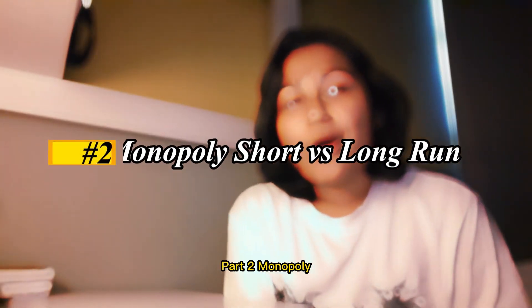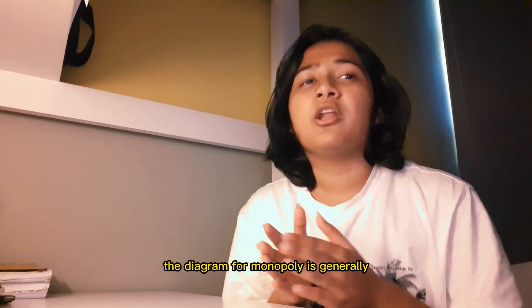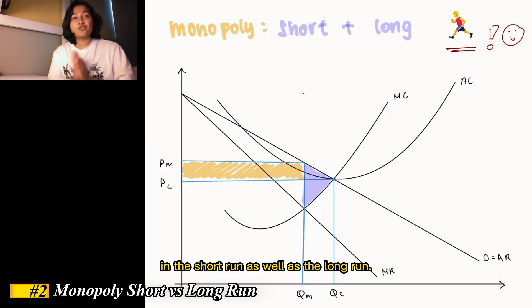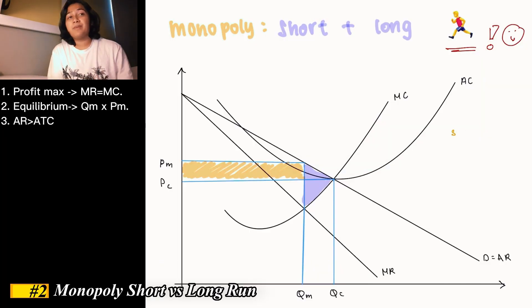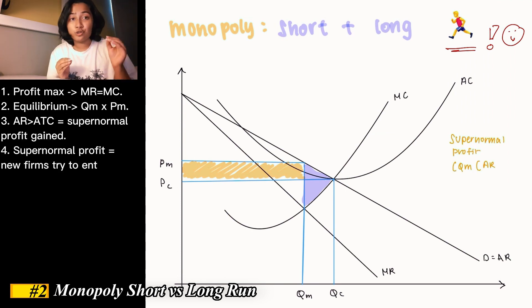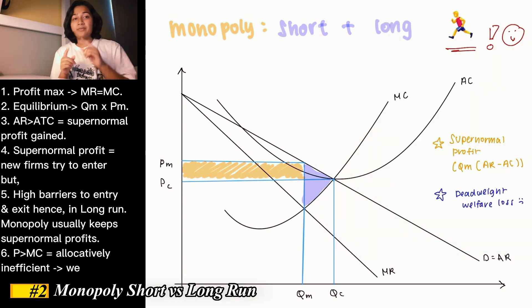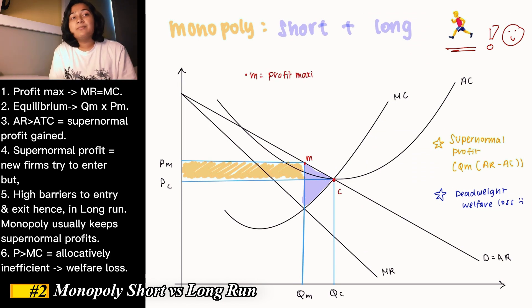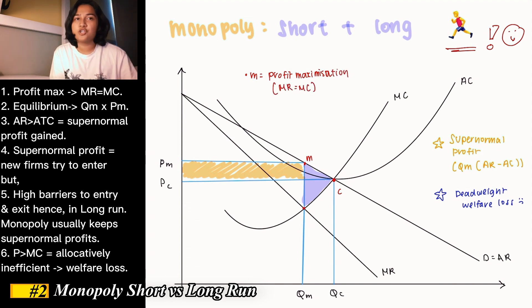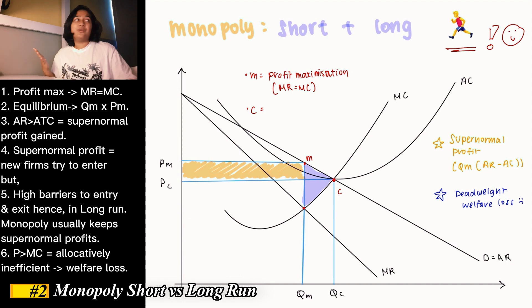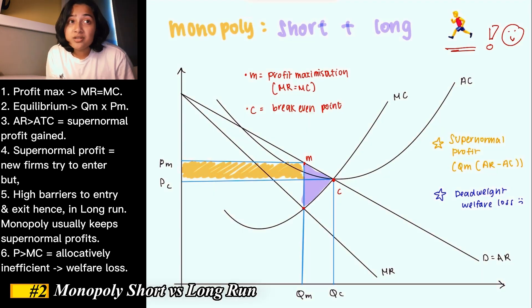Part 2: Monopoly short run and long run. The diagram for Monopoly is generally considered to be the same in the short run as well as the long run. Profit maximization occurs where marginal revenue is equal to marginal cost, or MR equals MC. Therefore, the equilibrium is at QM times PM, which is point M in this diagram. This diagram shows how a monopoly is able to make supernormal profits because the price, which is average revenue, is greater than average cost. Supernormal profit attracts new firms to enter the market, but there are barriers to entry in monopoly, and this enables the monopoly to keep supernormal profits.